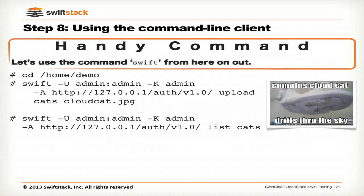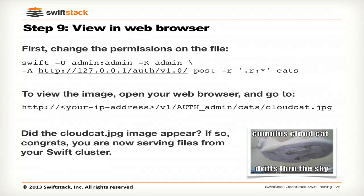Is there any questions? If the container 'cats' doesn't exist, the CLI tool automatically creates the container. Then if we ask the cluster again for a listing of all the files, we should get back the file we just uploaded. Now we're going to get really fancy: we're going to change some of the metadata on that container so that it's globally readable.